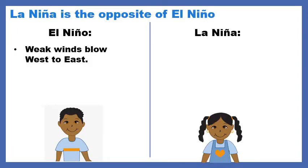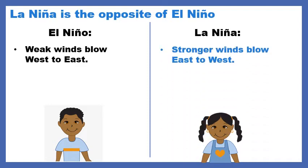Moving on. La Niña is the opposite of El Niño. In El Niño, weak winds blow west to east — remember, we're still in the Pacific. So if weak winds blow west to east, what's going to happen in La Niña? Stronger winds blow east to west. And remember, it's the opposite. In El Niño, warm waters move east. What's going to happen for La Niña?